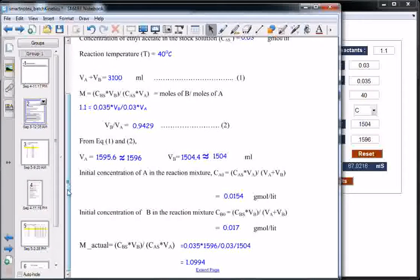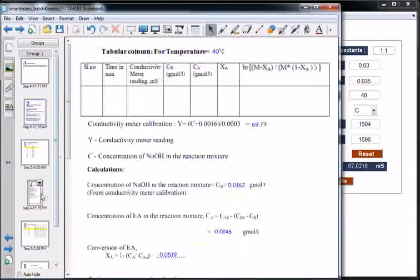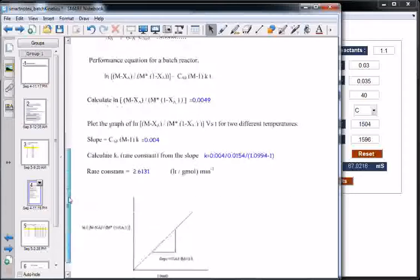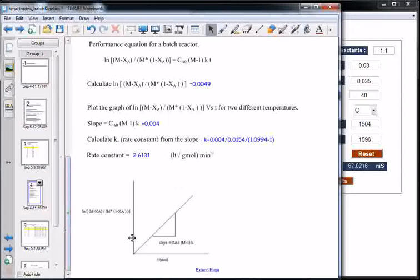Final aim of this experiment is to determine the rate constant from the performance equation. Performance equation of batch reactor is this one. Plotting this LHS versus time gives a plot of this kind. Slope of this plot is Ca0^(m-1) into K. K is rate constant. Knowing Ca0 and M, one can calculate rate constant.